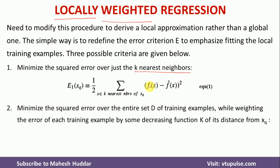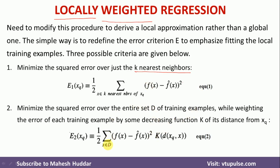The second possibility is to consider all examples but include a distance term, since we want to give more importance to nearby examples. We include K(d(xq, x)) — a decreasing function of distance — so that examples with minimum distance are given more importance. This incorporates the 'weighted' concept into the error term.